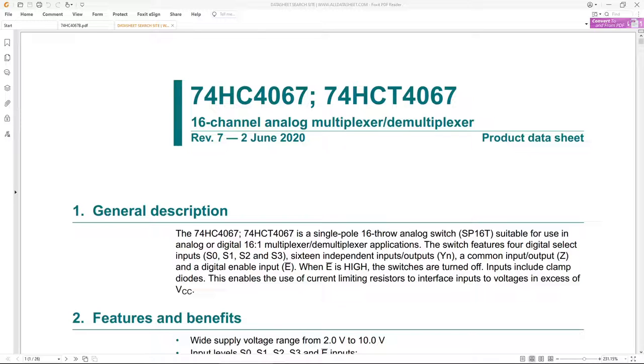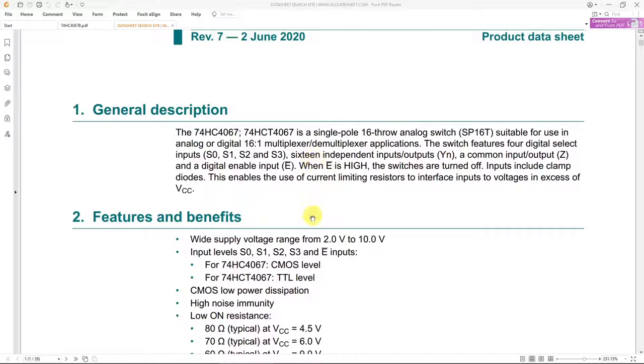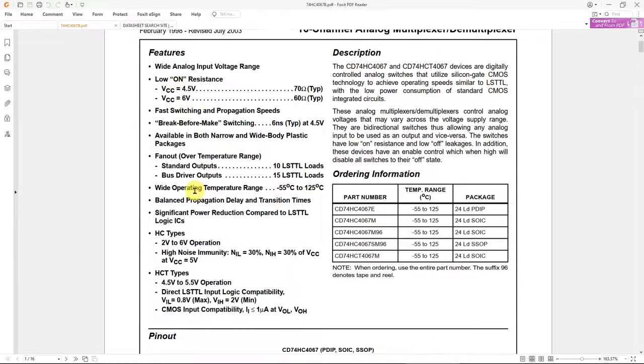There seem to be some minor differences depending on who you get these things from. This one claims to have a wide supply voltage range from 2 to 10 volts, but I've got another data sheet from Texas Instruments and theirs claims to be good for 2 to 6 volts operation, so that is quite a bit lower than the other one.